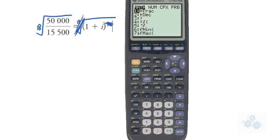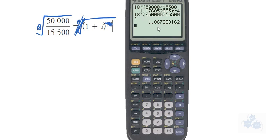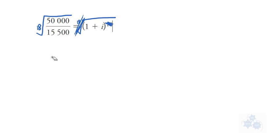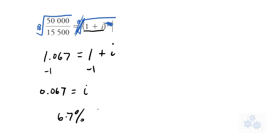So you'll have something like this on your calculator. So when you do that, the 18th root, you should get 1.067. And so what does this end up to be? 1.067 equals, and then we still have 1 plus i. So if you subtract 1, subtract 1, you get the interest rate 0.067. And that would be 6.7% interest rate. Okay.